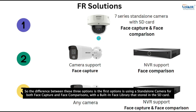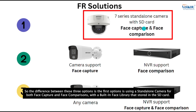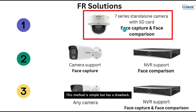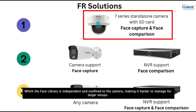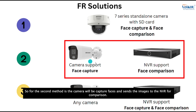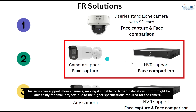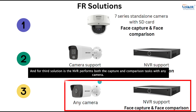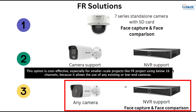The first option uses a standalone camera for both face capture and face comparison with a built-in face library stored on an SD card. It is simple but has a drawback — the face library is independent and confined to the camera, making it harder to manage larger setups. The second method has the camera capture faces and send images to the NVR for comparison, supporting more channels for larger installations but potentially costly for small projects. The third option has the NVR performing both capture and comparison with any camera — cost-effective for smaller-scale projects under 16 channels, allowing the use of existing or low-end cameras.